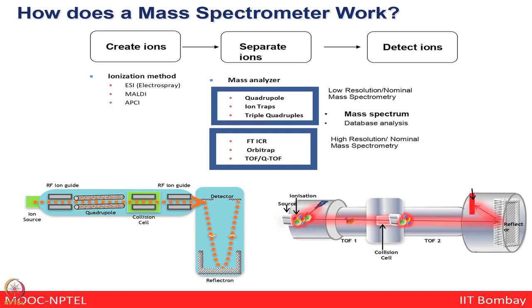Let us now move on to mass spectrometers and mass spectrometry-based proteomics — how a given mass spectrometer works. Very broadly, for any mass spectrometer, you first take the protein of interest, perform digestion of that protein to get peptides in solution form, which you want to further separate. A promising way is the LC-MS/MS approach using electrospray ionization (ESI). If you link your peptide in solution form with liquid chromatography directly interfacing to the mass spectrometer, ESI or electrospray ionization is the right choice.